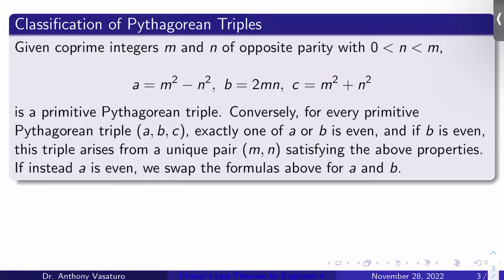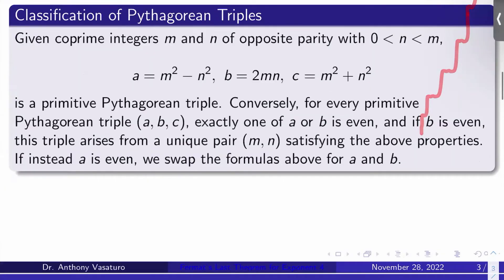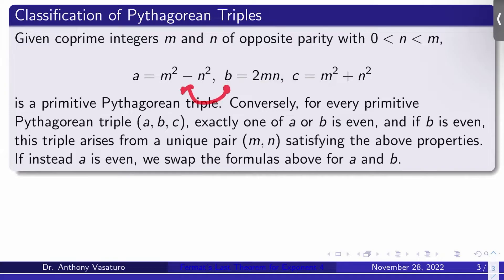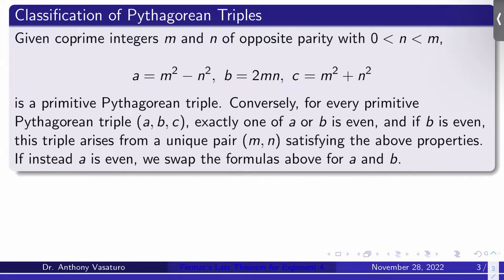That's a very easy calculation you can prove on your own. What's remarkable is that the converse is true. If I give you a primitive Pythagorean triple ABC, then exactly one of a or b is even. And if it's b that's even, this triple arises from a unique pair m, n satisfying these properties. If instead a is even, you just swap the formulas for a and b. So we've completely and succinctly classified all Pythagorean triples by very simple equations — we can parameterize them easily, and there are infinitely many interesting solutions to x² + y² = z² over the natural numbers.